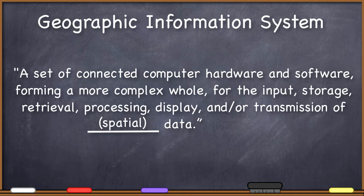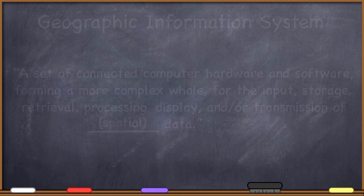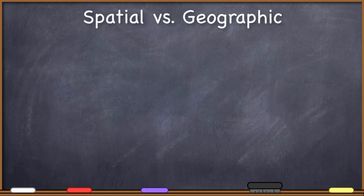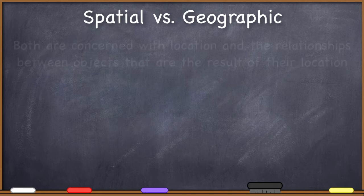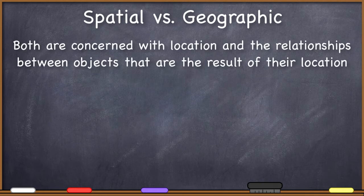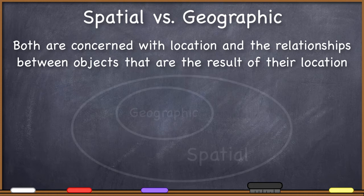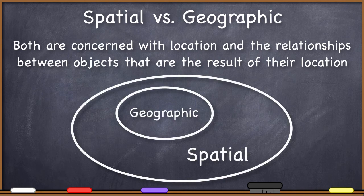Are the terms 'spatial' and 'geographic' synonyms? I think not. What is the difference between something that is spatial and something that is geographic? You sometimes hear these two words being used as if they are synonyms, but there is an important distinction that needs to be made, especially if you're working in GIS. While in an overarching sense both spatial and geographic are concerned with locations and the relationships between objects that occur because of their location, I think 'geographic' is a much more narrow term than 'spatial.'